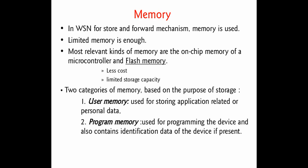Next, we are going to talk about memory. Memory is a device used to store and forward data in a WSN sensor node. Generally, memory is a storage device used to store information either in a temporary or permanent manner. We have two types of memory: non-volatile memory and volatile memory. Non-volatile memory is permanent storage, whereas volatile memory is temporary storage.